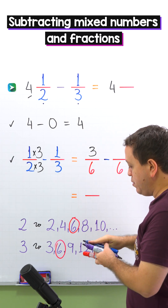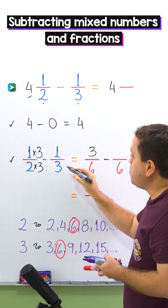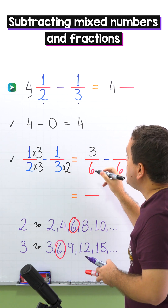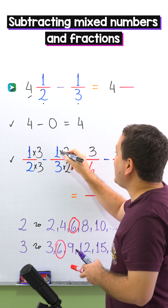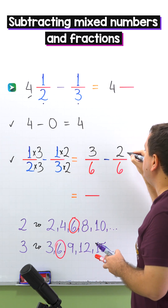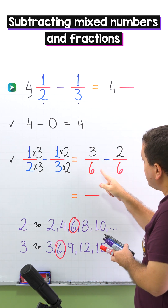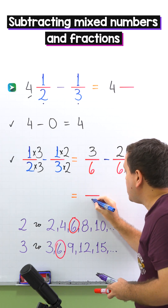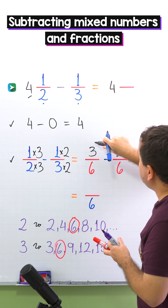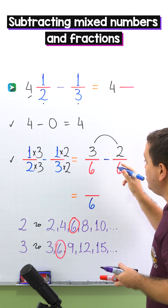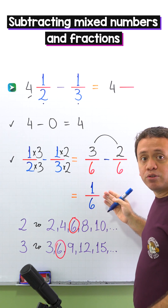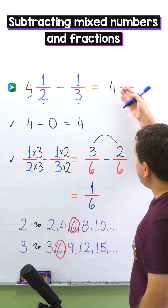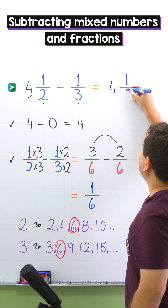Let's continue with one third. By what number should we multiply three to get six? By two, because three times two gives us six. Whatever we do to the bottom we must do to the top, and one times two gives us two. Now we subtract these two fractions with the same denominator. We have six on the left and six on the right, so we put six as the denominator and subtract the numerators: three minus two gives us one. The difference of the fractions is one sixth. Finally, we add the difference of the fractions to four, putting one sixth next to four.